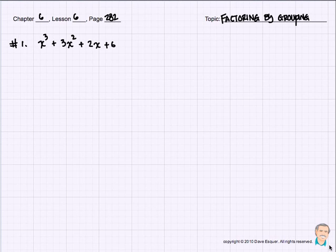Good morning. Chapter 6, Lesson 6 is on page 282, and it's called Factoring by Grouping. The clue is that when we're factoring by grouping, we're going to see that usually there are four terms in these polynomials.